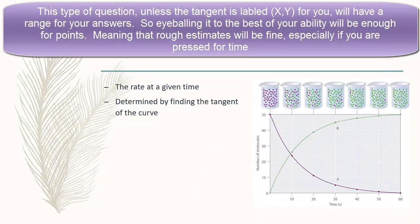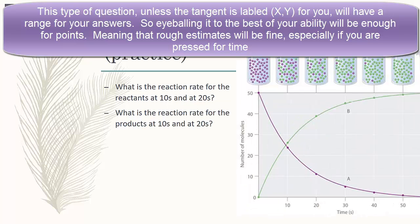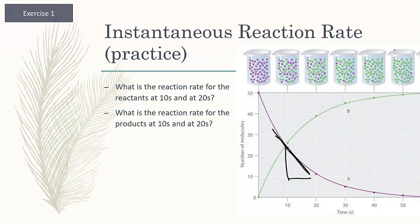The slope of that tangent line at the instant you're looking at can be used to talk about the rate of the reaction. So instantaneous rate is determined by taking a tangent of that line. So example one says, what is the rate of reaction for the reactants at 10 and 20 seconds? If we take the tangent of the line at 10 seconds, we can find that by doing some simple algebra. The rise here seems to be about 15. The run is approximately 7. So a negative 15 over 7 for 10 seconds.